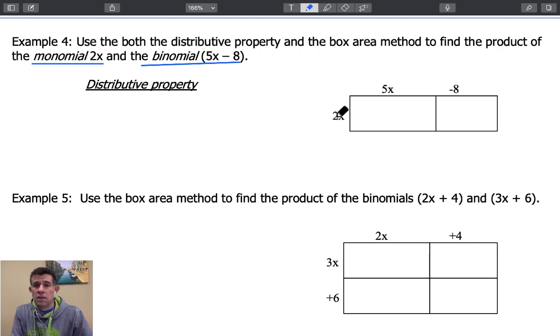Let's start off by using the box area method. We have a rectangle that has the dimensions 2x by 5x. That's 2 times 5, which is 10, and then x times x, remember is x squared. Anytime we add variables, x plus x, we add the coefficients in front of them, which would give us 2x.